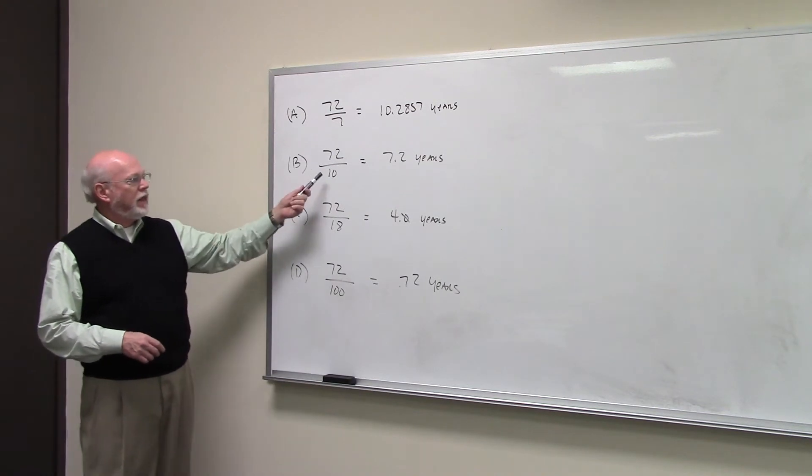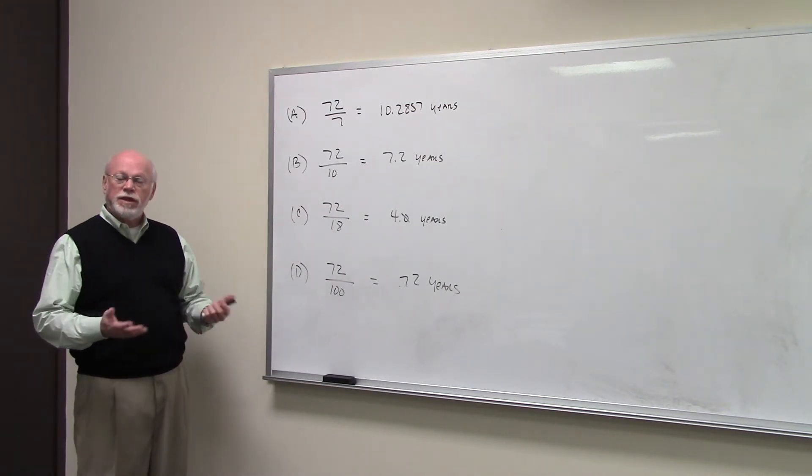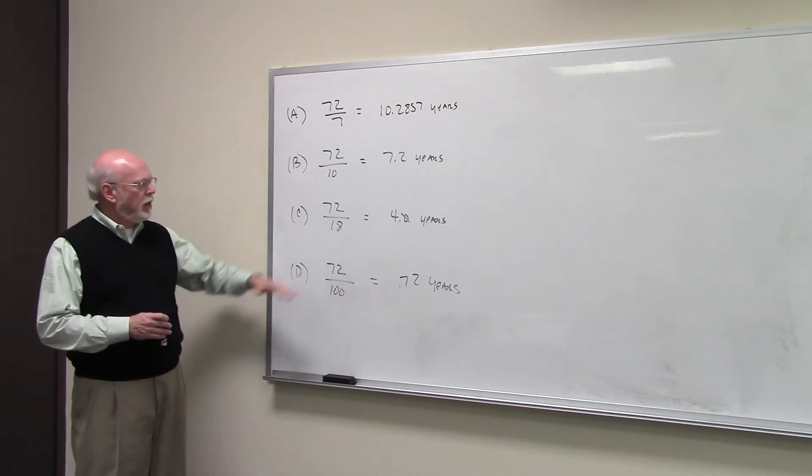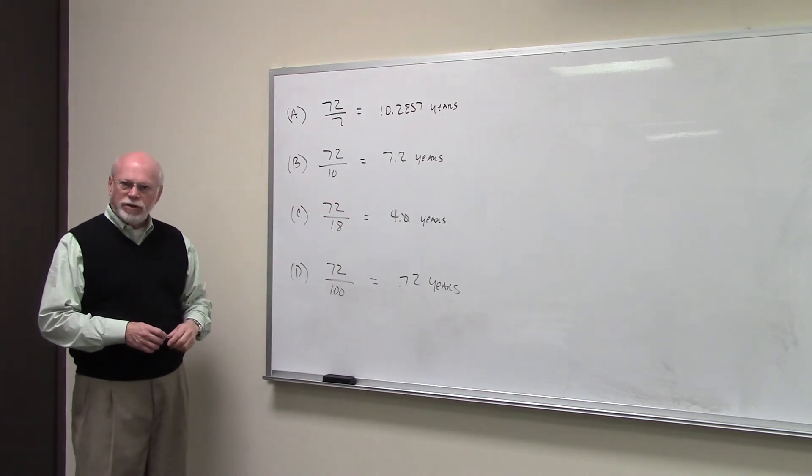How long would it take a lump sum to double if you earn 10% per year? 72 divided by 10, 7.2 years. For 18%, 72 divided by 18, 4 years.